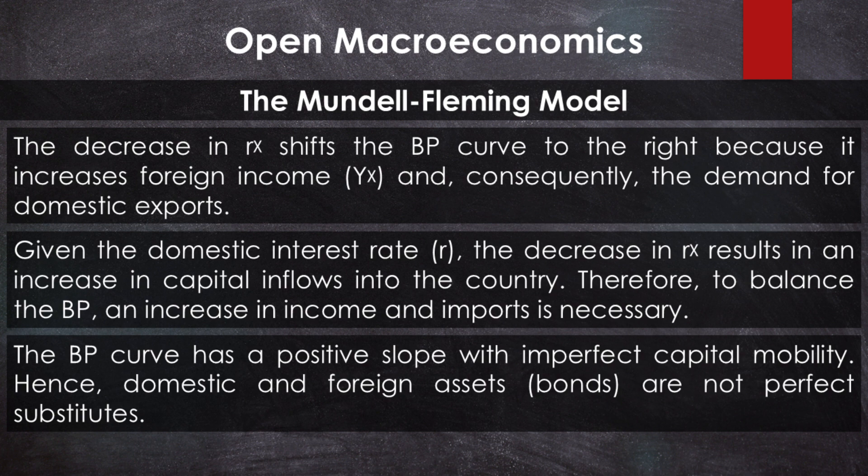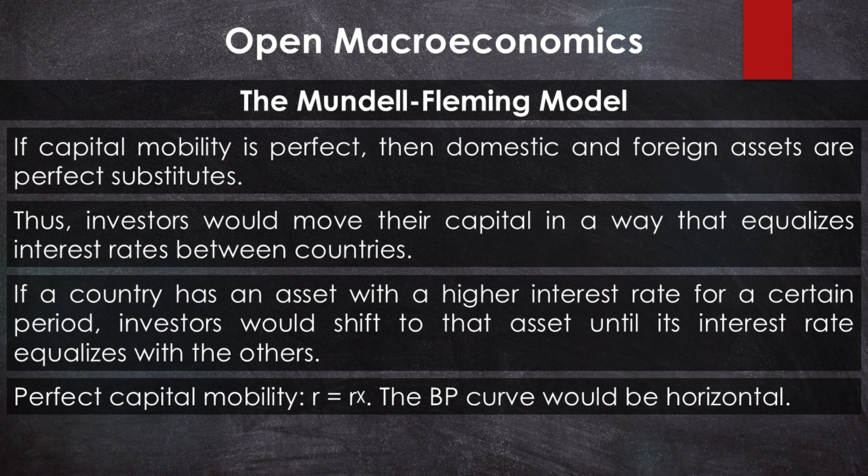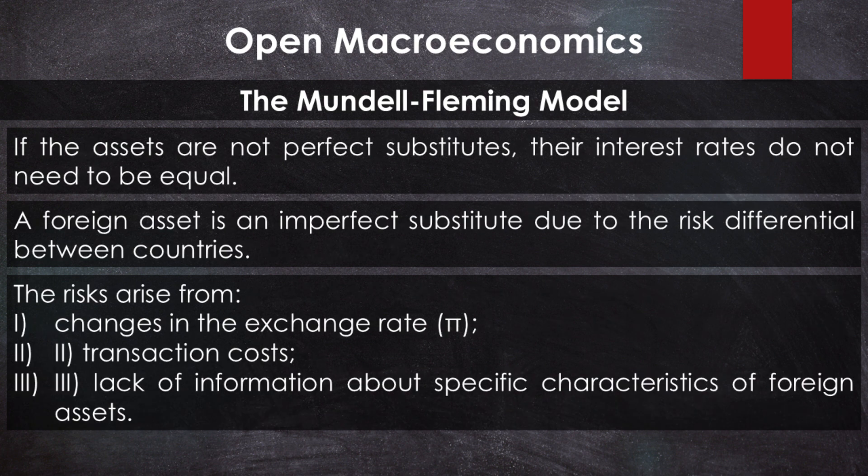In the case of imperfect capital mobility, domestic and foreign assets such as bonds are substitutes but not perfect substitutes. In the case of perfect capital mobility, domestic and foreign assets would be perfect substitutes. Investors always seeking the highest interest rate would move in such a way as to equalize interest rates between countries, so with perfect capital mobility we have R equal to Rx, and the BP curve would be horizontal. If assets are not perfect substitutes, their interest rates do not need to be equal. Factors making foreign assets imperfect substitutes for domestic assets include risk differentials, such as exchange rate risk, transaction costs, and lack of information about foreign assets.